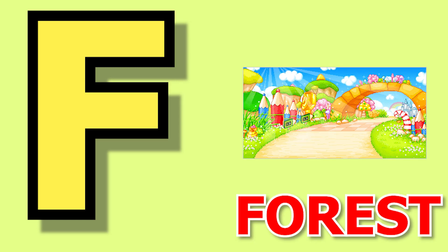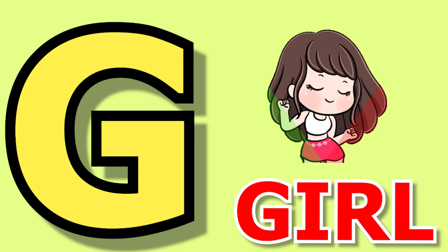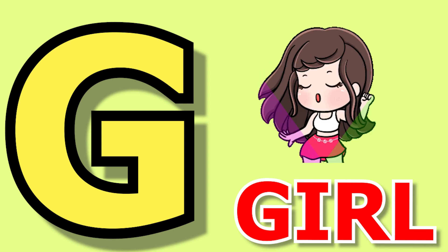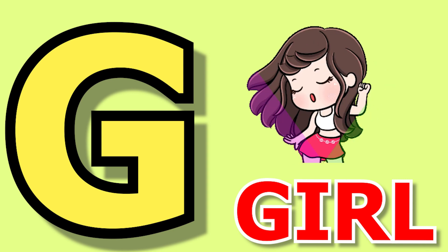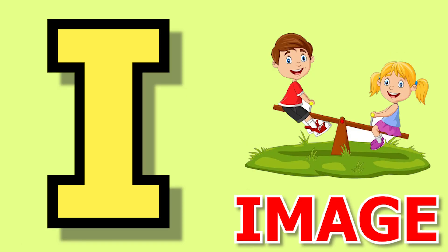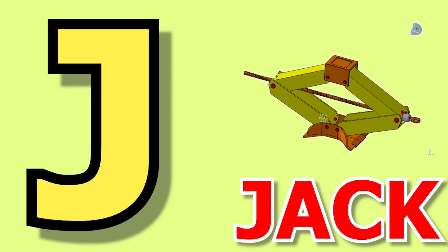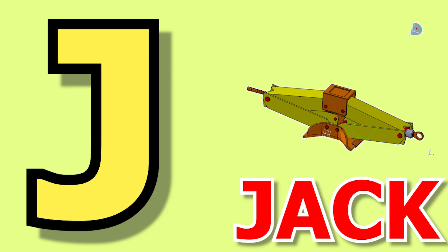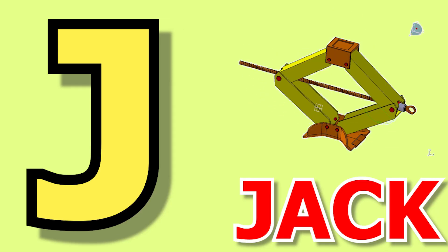F for forest, forest means jungle. G for girl, girl means ladki. H for horn, horn means horn. I for image, image means chitr. J for jack, jack means jack.